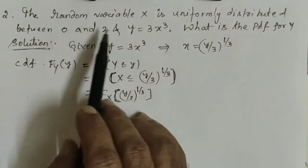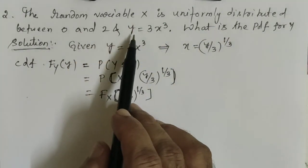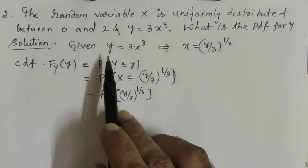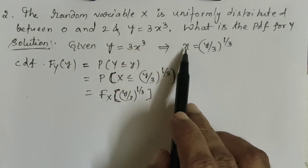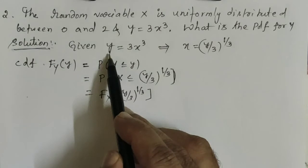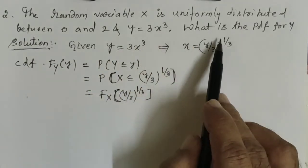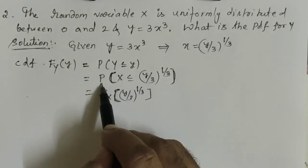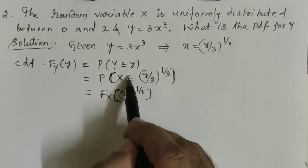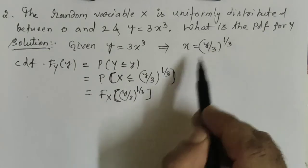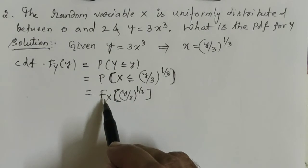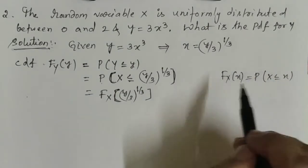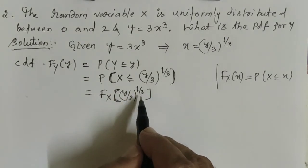Consider the next problem. The random variable X is uniformly distributed between 0 and 2, and Y = 3X³. What is the PDF of Y, that is f_Y(y)? The given function is Y = 3X³. From this, X = (Y/3)^(1/3). The cumulative distribution function of Y is F_Y(y) = P(Y ≤ y), which means P(X ≤ (y/3)^(1/3)) = F_X((y/3)^(1/3)).